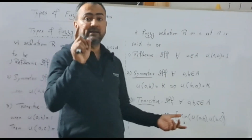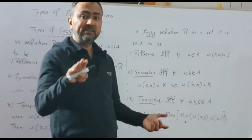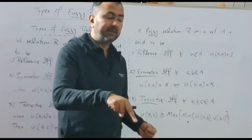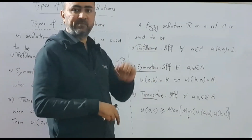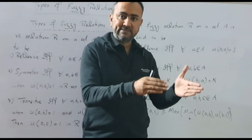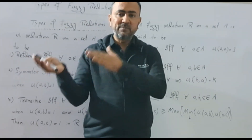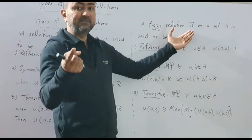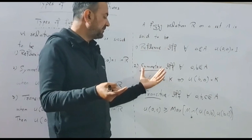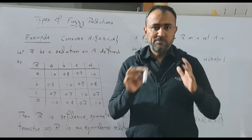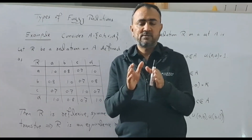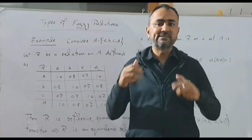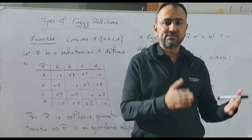A fuzzy relation R on a set A is said to be a fuzzy equivalence relation if it is reflexive, symmetric, and transitive — just like equivalence relations in crisp set theory. We now have an example that covers the topic of fuzzy equivalence relation, meaning the fuzzy relation given will be shown to be reflexive, symmetric, and transitive.